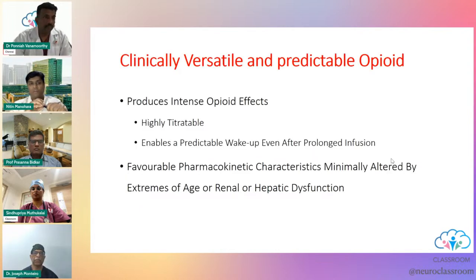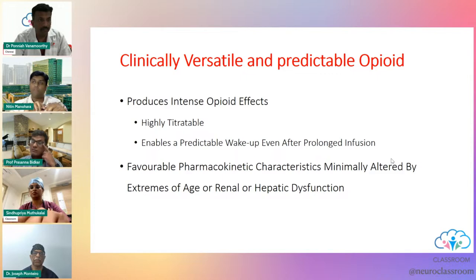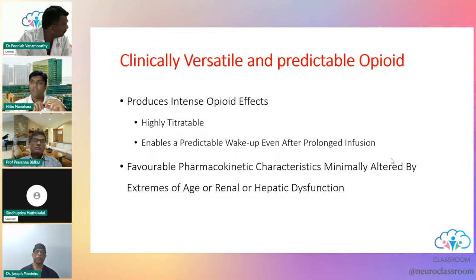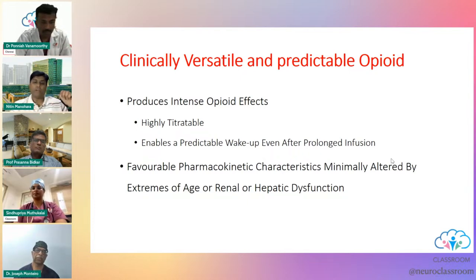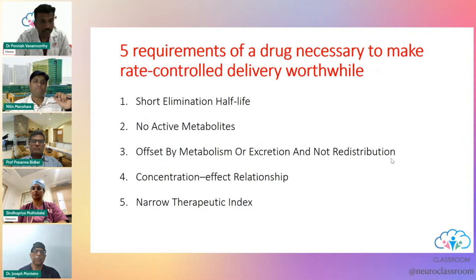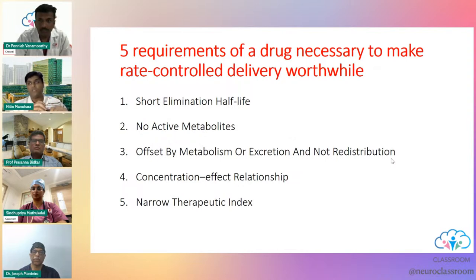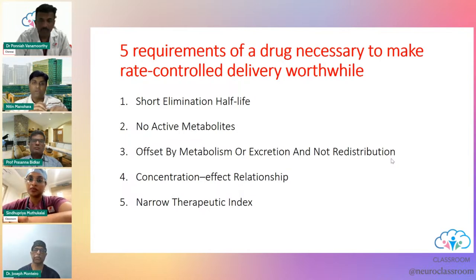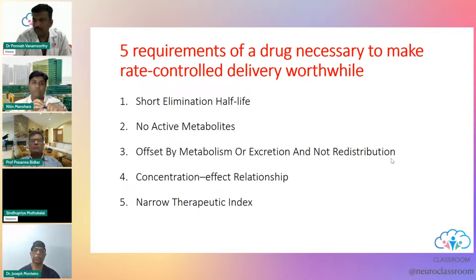To summarize: remifentanil is a very intense, highly titratable opioid with a very predictable drug profile. It enables quick wake-up even after prolonged infusion, is not affected by extreme age, and can be used in renal or hepatic dysfunction. You must know its side effects to use it effectively. It fulfills all requirements of a rate-controlled delivery system: short elimination half-life, no active metabolites, rapid offset by metabolism, predictable linear concentration-effect relationship, and a narrow but manageable therapeutic index.